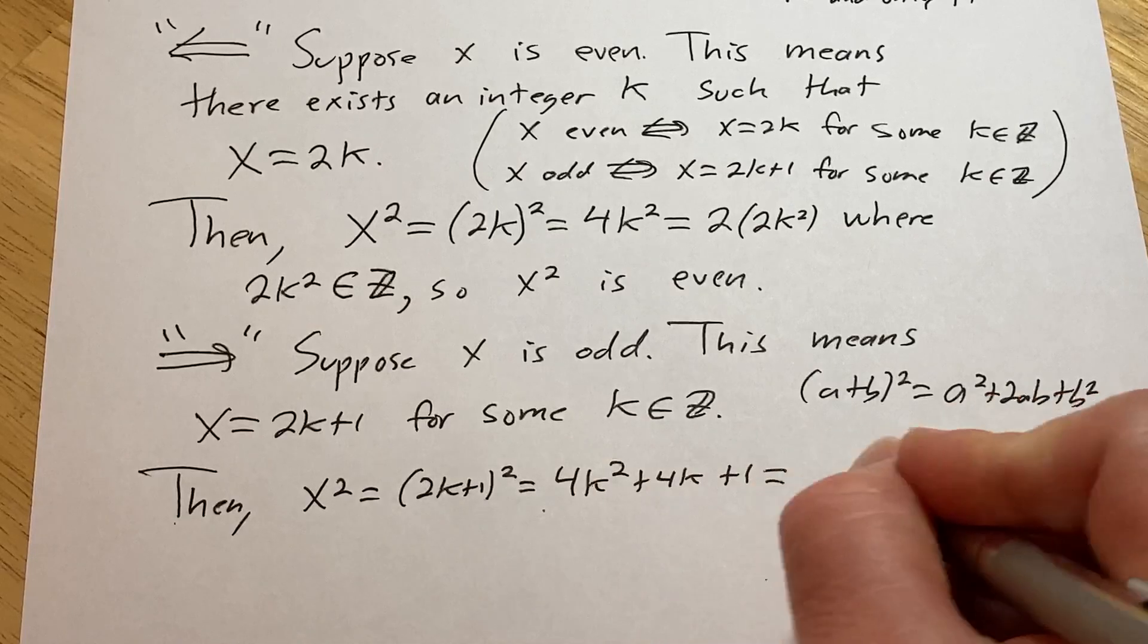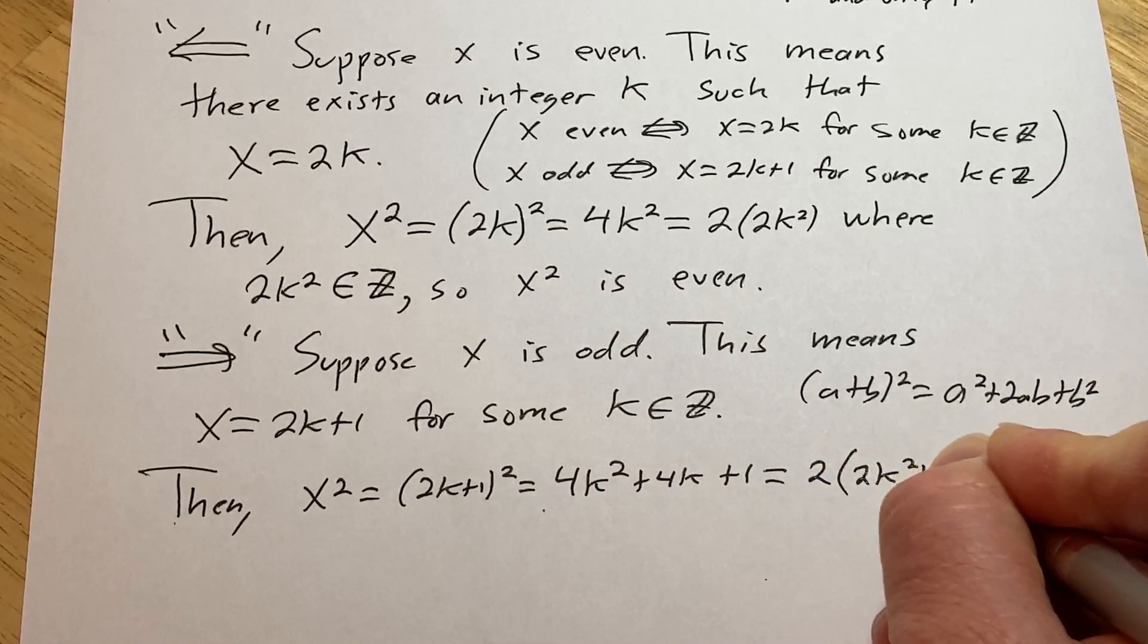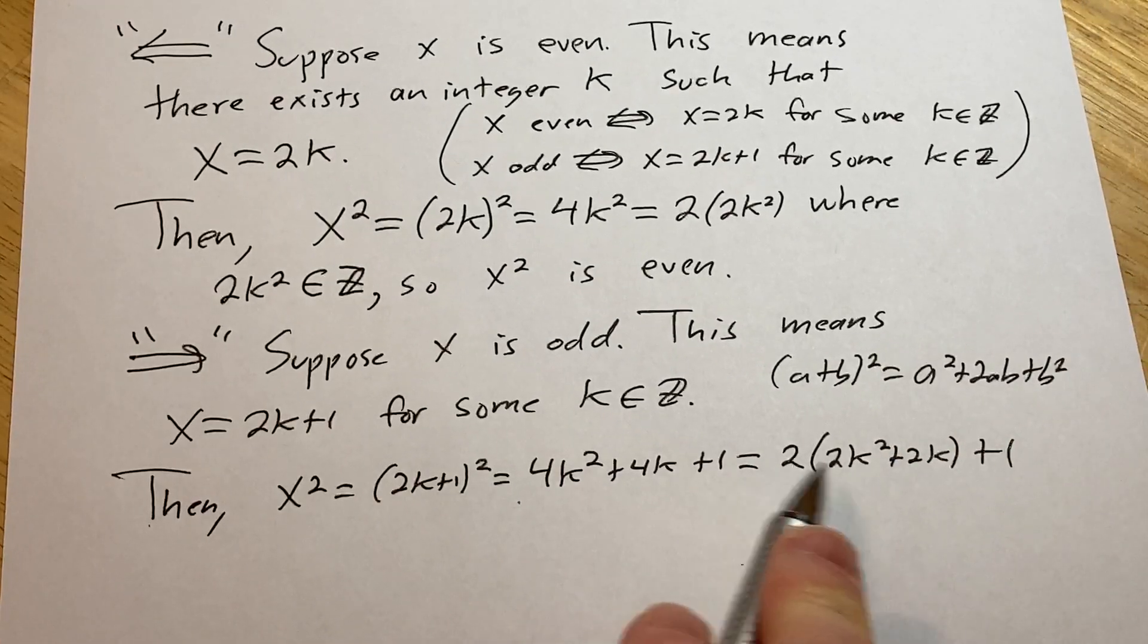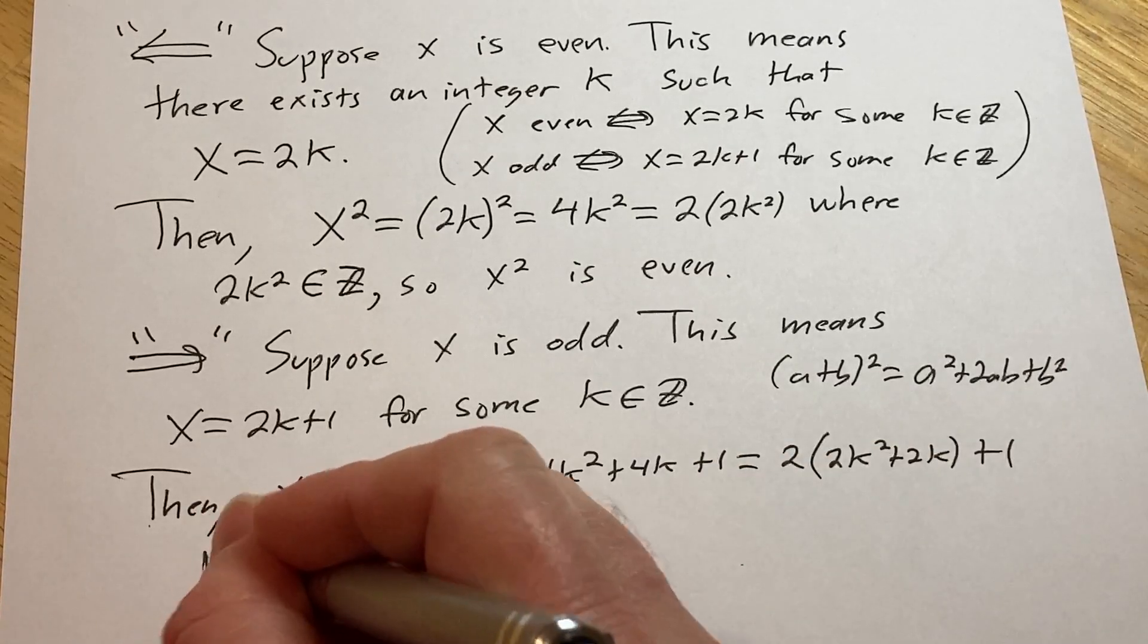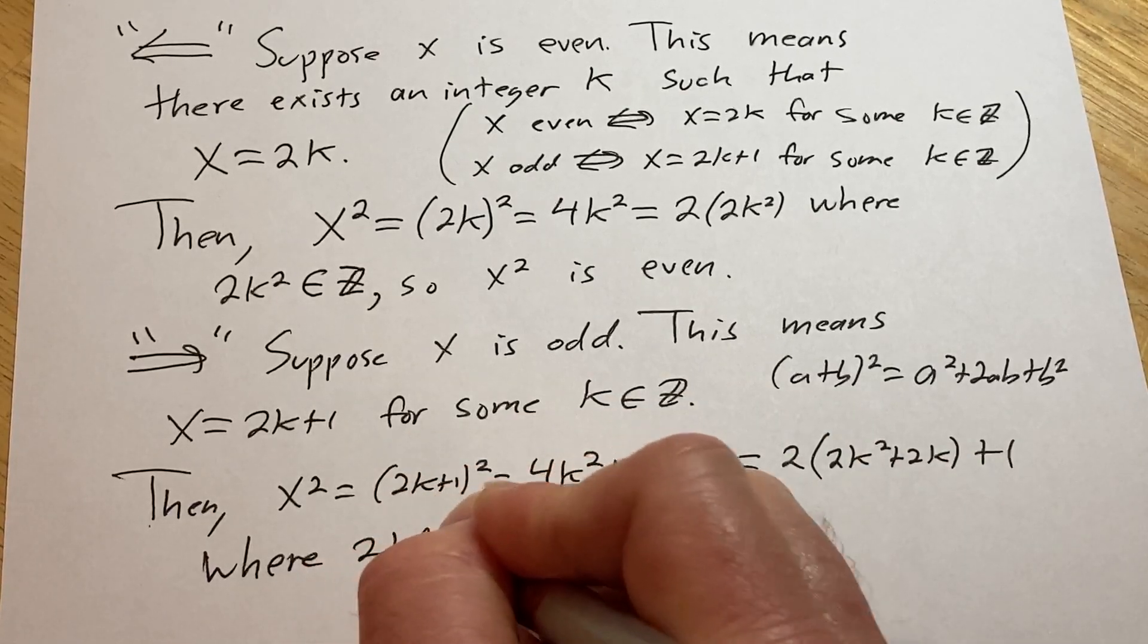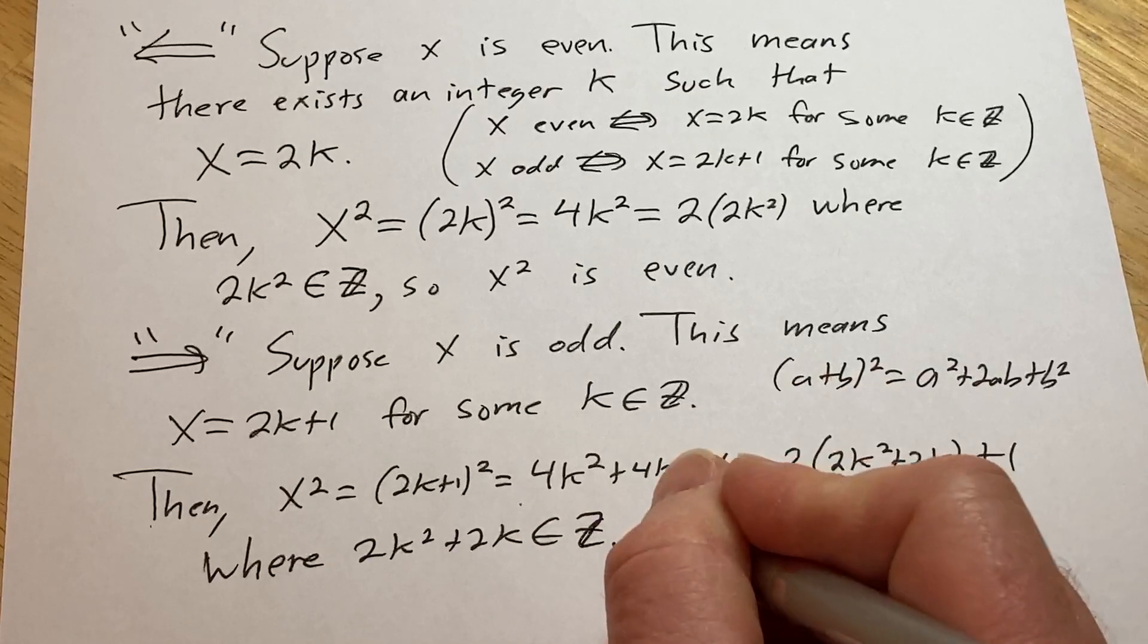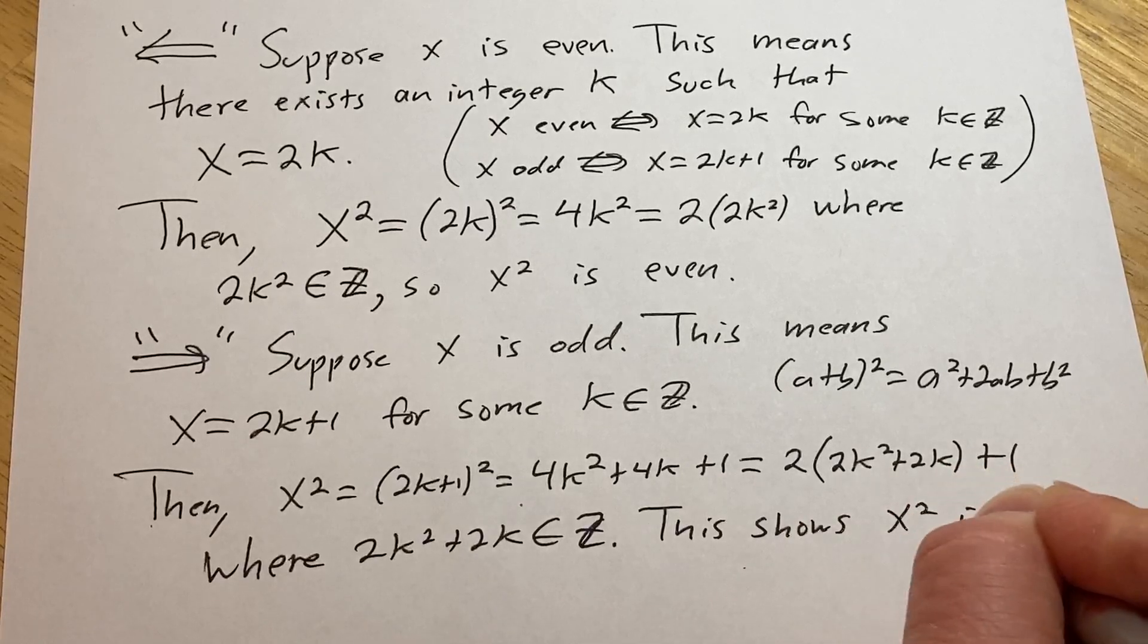So I guess we can factor out a 2 here. So we get 2, 2k squared plus 2k plus 1. Let me make sure we did that right. 2 times 2k squared is 4k squared. 2 times 2k is 4k, where 2k squared plus 2k is an integer. This shows x squared is odd.